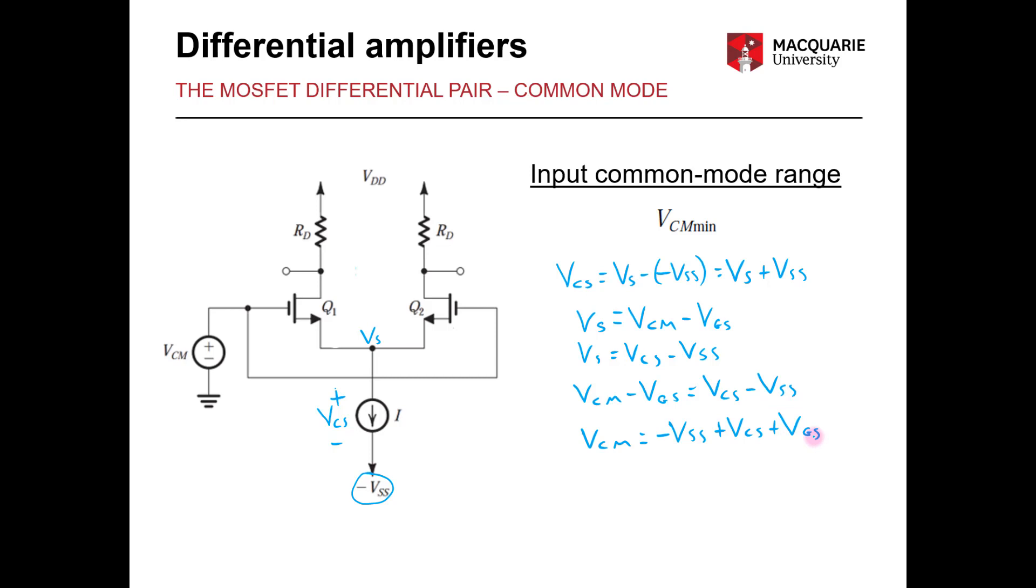And we can simply rearrange this last expression in terms of VCM. And you can see that we now have an expression for VCM in terms of VCS and some of our other circuit parameters. And as our VCS here is defined as the minimum voltage needed across that current source, this also equates to VCM min. And of course we can also express that in terms of the threshold voltage and overdrive voltage.